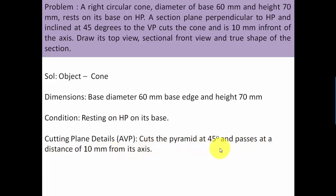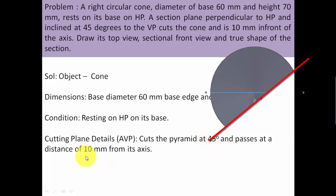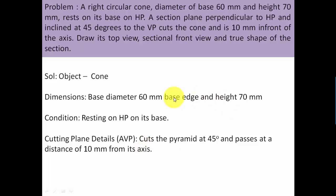The cutting plane passes at a distance of 10 millimeters from the axis. When you speak of an auxiliary vertical plane, this plane is perpendicular to HP, so it will appear as a line in the top view making a 45-degree angle, passing from a point that lies 10 mm from the axis. The solution is divided into three phases: phase one is positioning the object relative to HP and VP, phase two is the cutting plane details, and phase three is drawing the views.